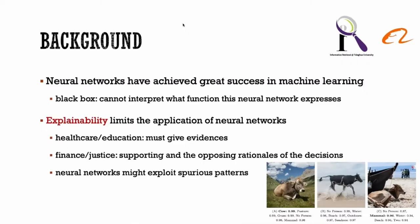Neural networks have achieved great success in recent years. However, due to the black-box nature, existing neural networks lack explainability, which has limited applications in domains requiring transparency and accountability. Moreover, neural networks might exploit spurious patterns as shortcuts instead of learning causal patterns that consistently work on both in-distribution and out-of-distribution data.